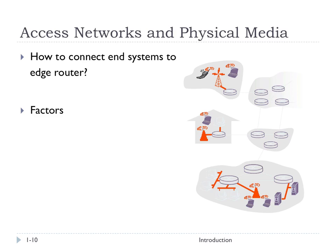If you're at an institution like a university or a company, you may get access through an institutional access network, like the network here at this school. Or if you're out on your phone, you may access the network through a mobile access network, like 3G or 4G.